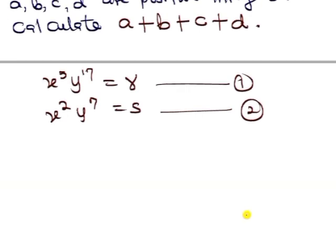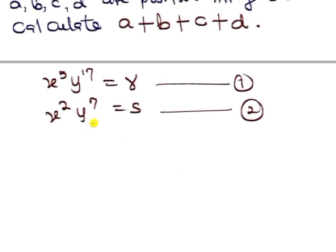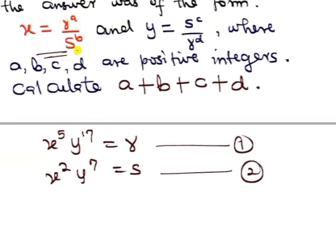And so what are we going to do now? The two solutions x and y are in terms of s and r. In other words, if we get the value of x in terms of s and r, then whatever is the power will be equivalent to our a and b. That means we need to get x to be in terms of r over s. Whatever is the power of r will be a and whatever is the power of s will be b.